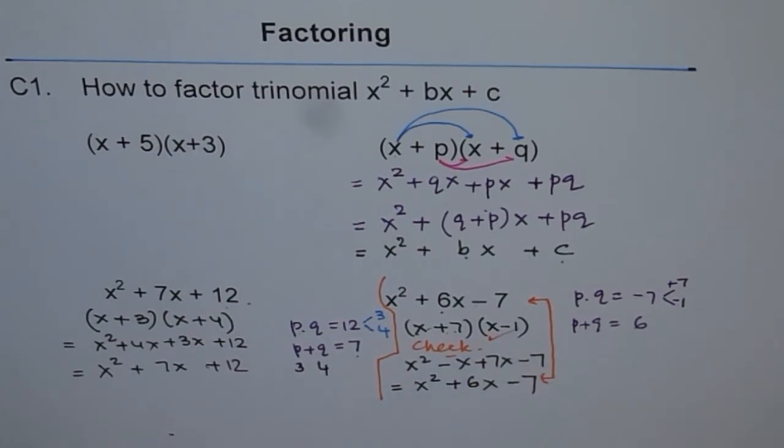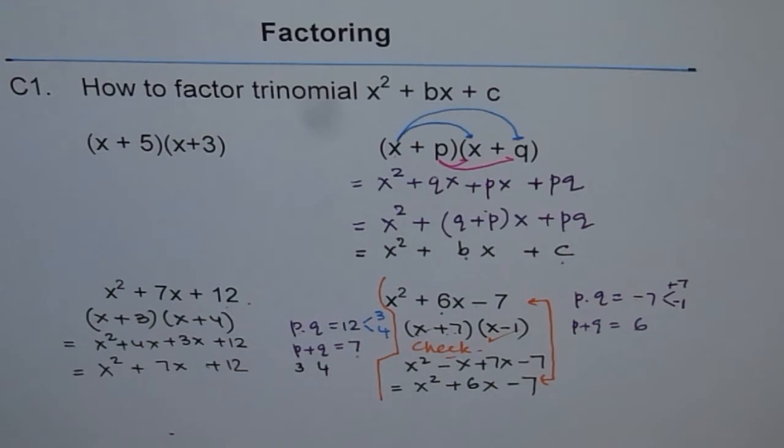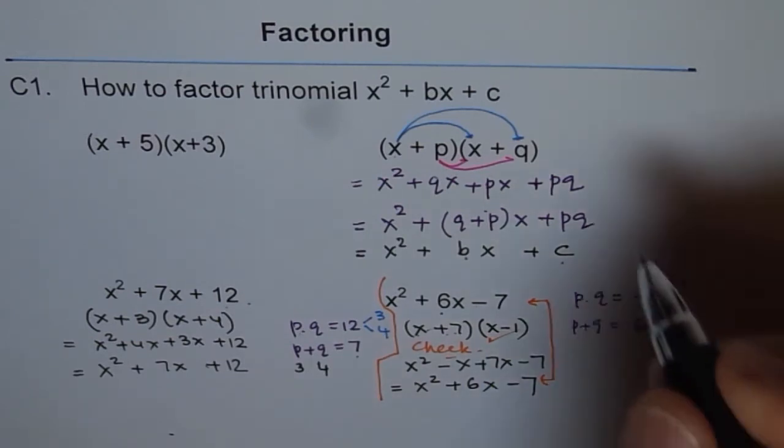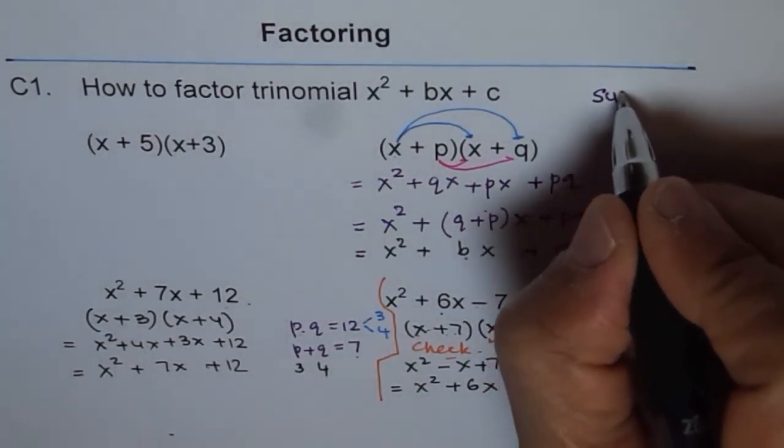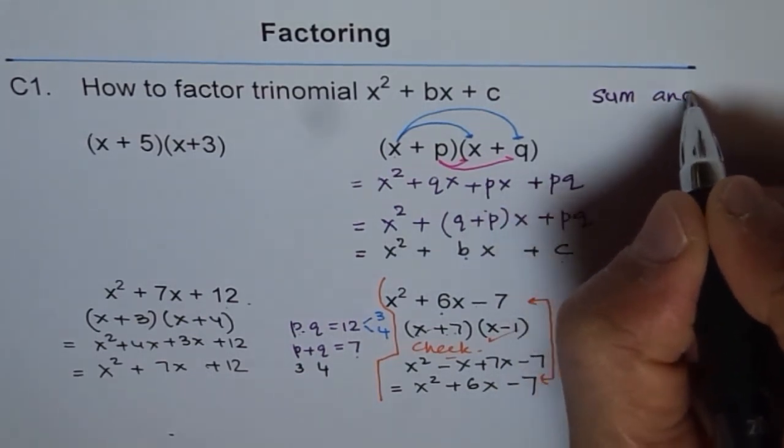That means this is the correct way of factoring trinomials. So with these examples, I think I am able to explain you and you are able to understand why we do this sum and product method. So this is a very common method now, a very popular, and we call it sum and product.